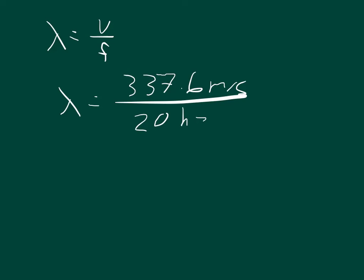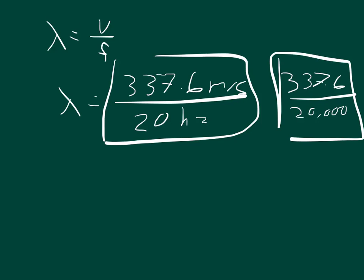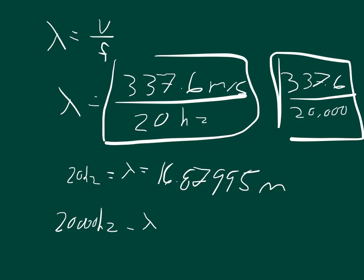So 20 hertz, and then we have another frequency that we want to check at 20,000 hertz. And so finding each one of these is going to tell us the wavelength at that frequency. And so at the frequency of 20 hertz, the wavelength is equal to 16.87995 meters. And at 20,000 hertz, the wavelength is equal to 0.01688 meters.